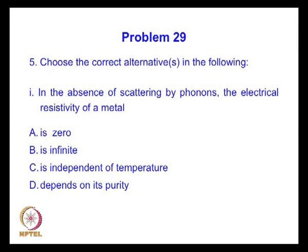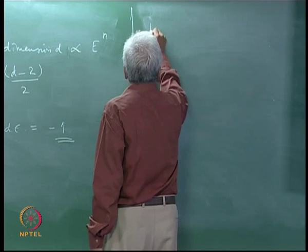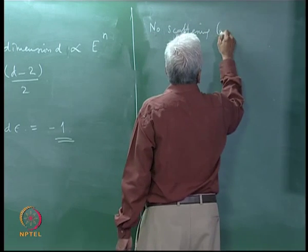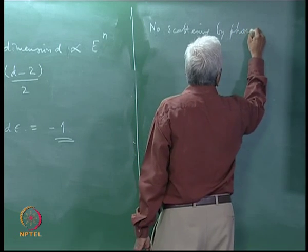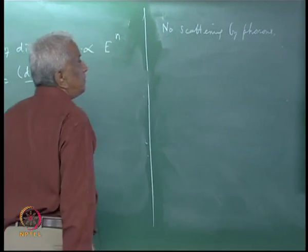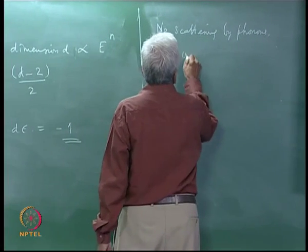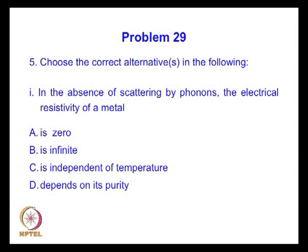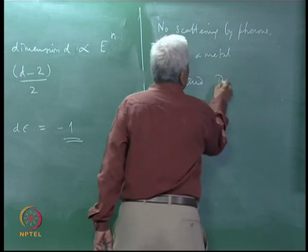In the next question we are given a set of correct alternative answers and we are asked to choose the correct alternative – there may be more than one correct alternative. So, when there is no scattering by phonons, we are told the statement is: the electrical resistivity rho of a metal – is it zero, is it infinite, or is it independent of temperature, and does it depend on its purity? Obviously, C and D are the correct alternatives.